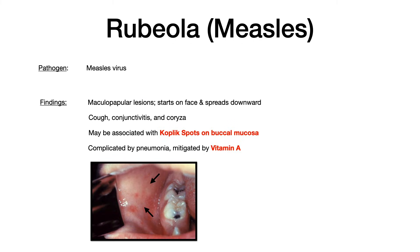Now we'll talk about rubeola, also known as measles. The pathogen is the measles virus. The findings are a maculopapular lesion that usually starts on the face and then spreads downward — so measles works top down. It's associated with the three C's: cough, conjunctivitis, and coryza. It may be associated with Koplik spots, which are spots that appear on the buccal mucosa. If you see Koplik spots, that's a dead giveaway for measles. This can be complicated by pneumonia, and very high yield for exams is that you give doses of vitamin A to mitigate this.